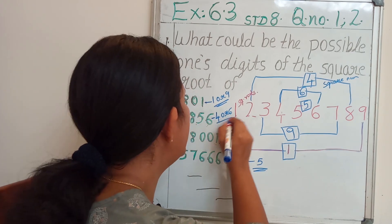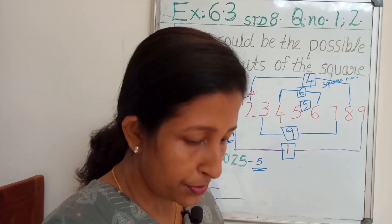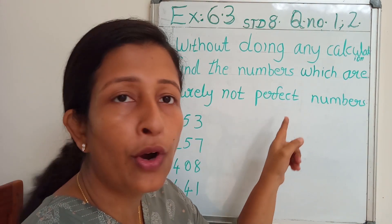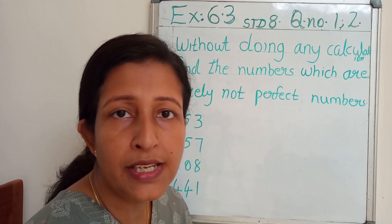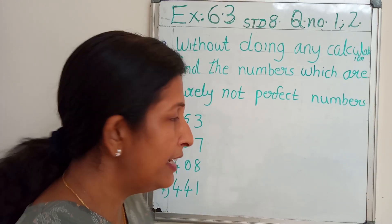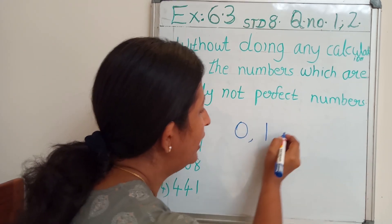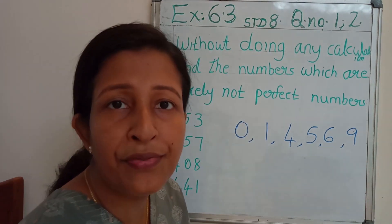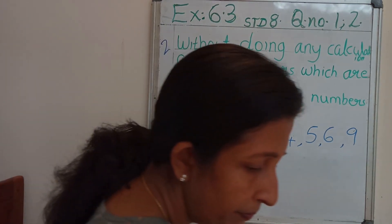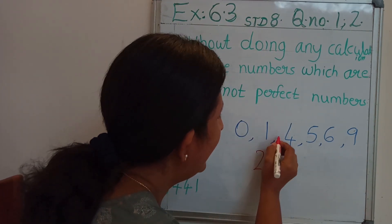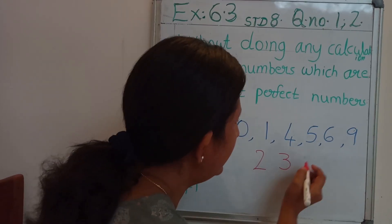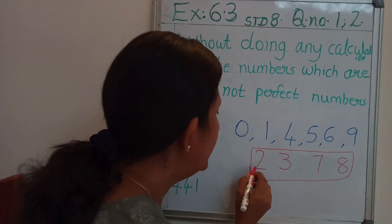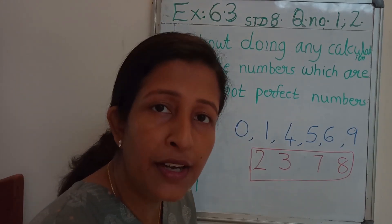Now we can go to question number 2. Question number 2 says: without doing any calculation, find the numbers which are surely not perfect squares. We have studied that the numbers ending with 0, 1, 4, 5, 6, or 9 are surely perfect squares. That means the numbers ending with 2, 3, 7, or 8 are not perfect square numbers.